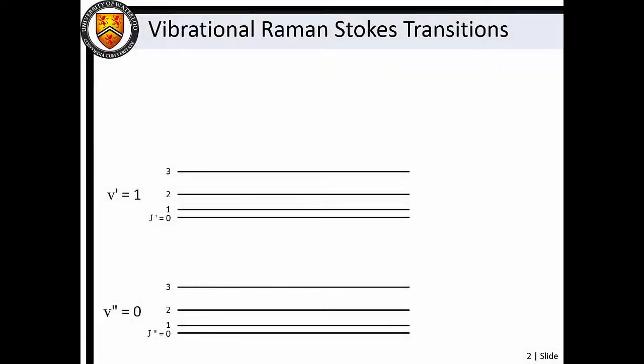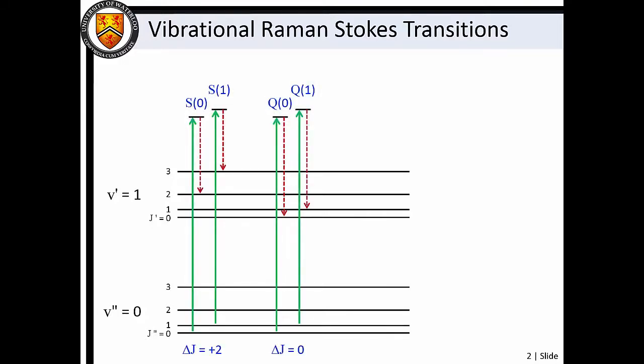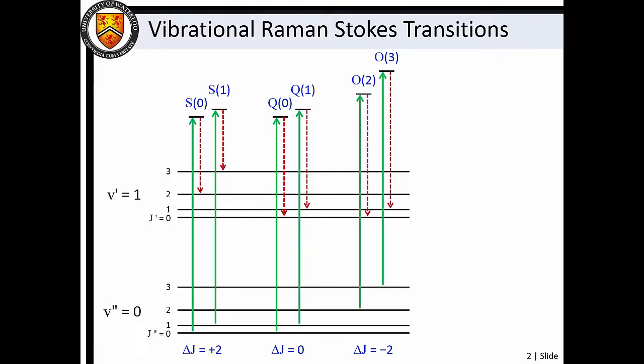Vibrational Raman transitions arise from inelastic light scattering processes wherein the molecule changes vibrational state. Conservation of angular momentum dictates that vibrational transitions must be accompanied by rotational transitions of delta J equals plus two, zero, or minus two, which gives rise to S, Q, and O branches.